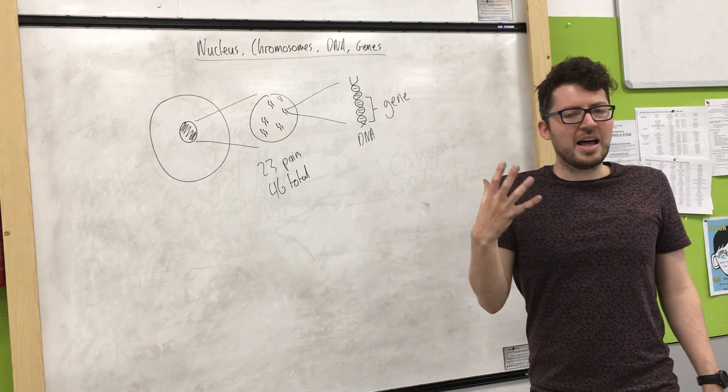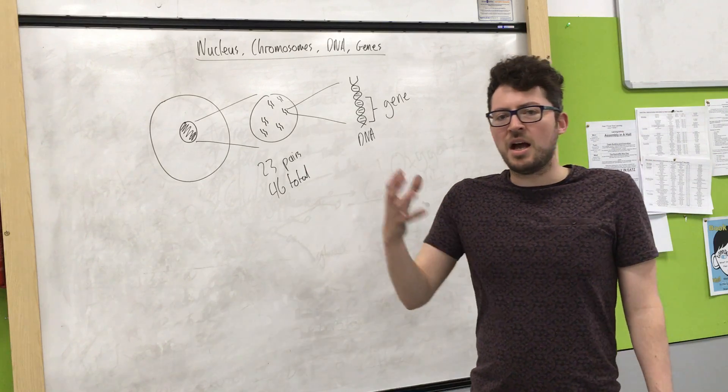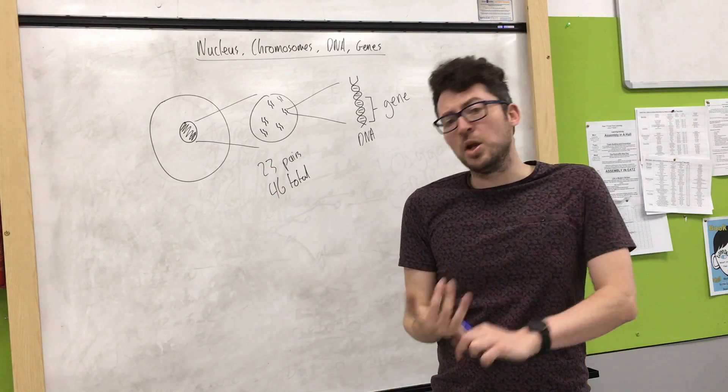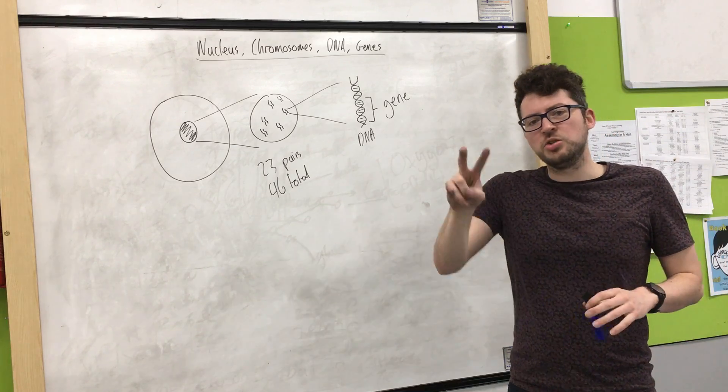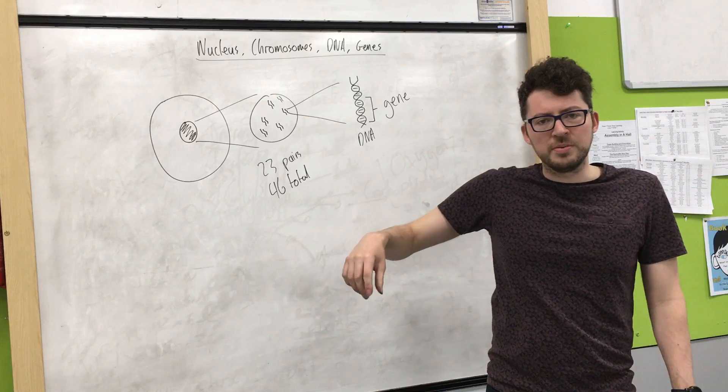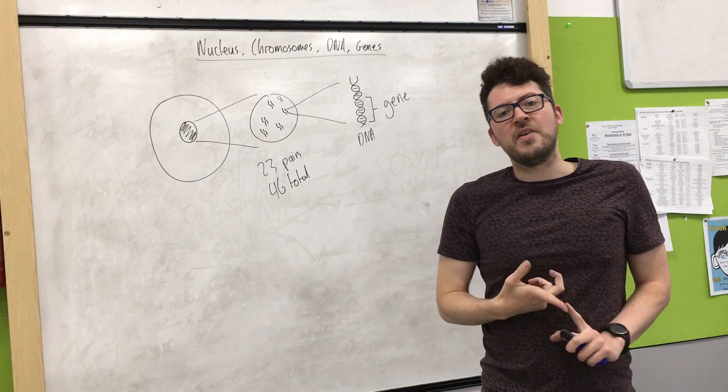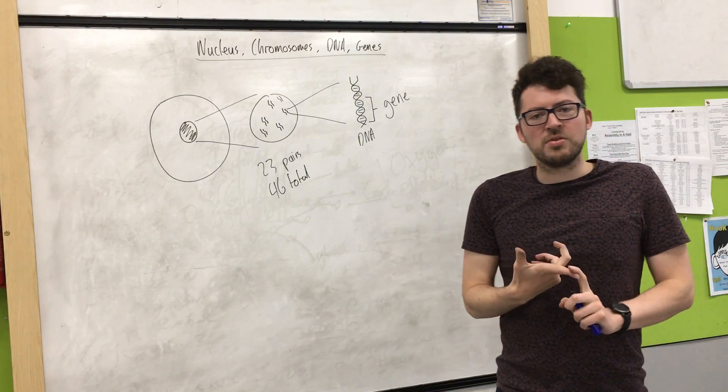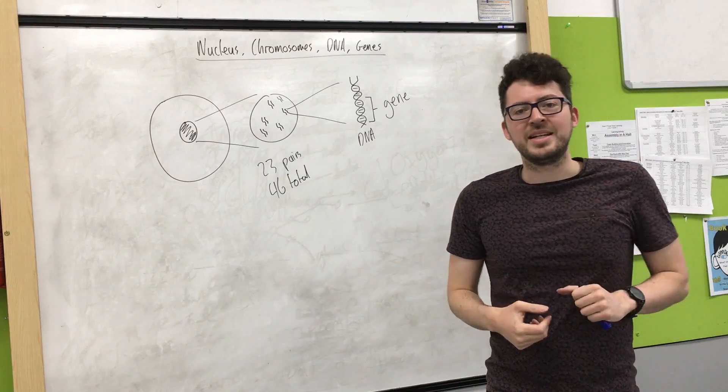For example, I'll have a gene that gives me my eye colour being blue. Now, we inherit two genes for every feature, because we have two sets of the chromosomes. One from our mother, one from our father. So I will have two genes for eye colour, one from my mum, one from my dad.